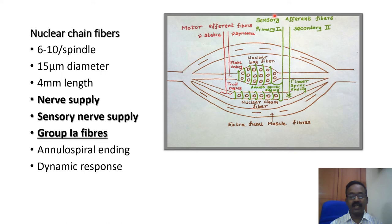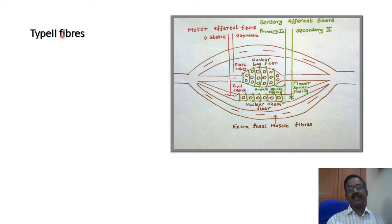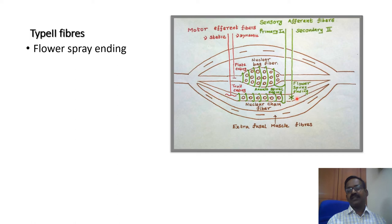Type 2 secondary afferent fibers supply the polar ends of the nuclear chain fibers in the form of flower spray endings. They respond to sustained muscle stretch and measure muscle length.